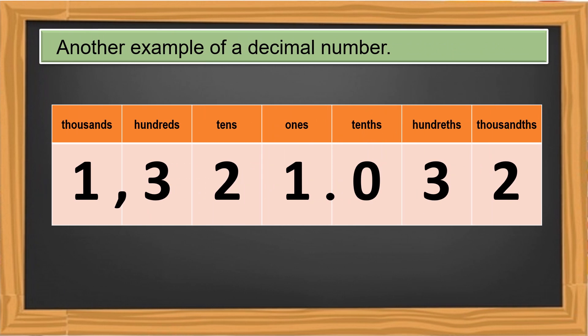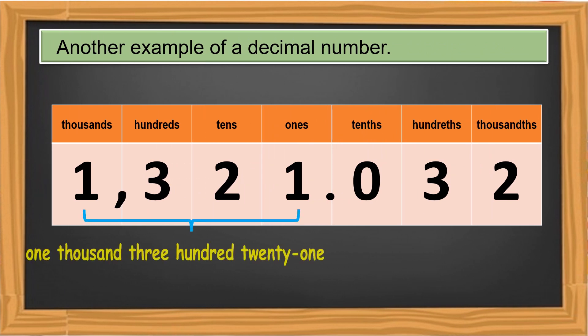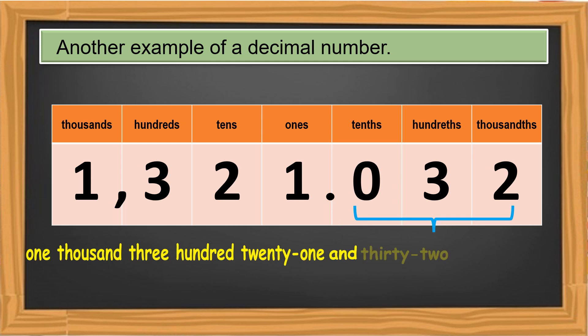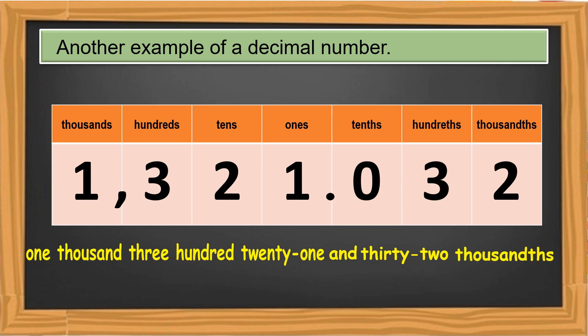Another example of a decimal number. First, write the whole number. Then write 'and' for the decimal, then the number on the decimal part. Don't forget the place value of the last digit. This number reads as 1,321 and 32 thousandths.